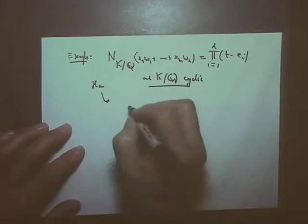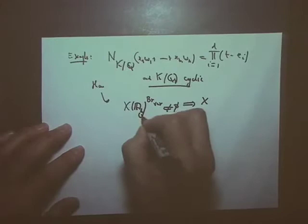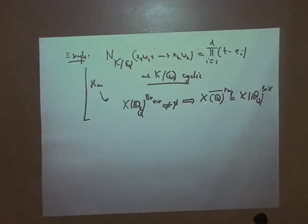Then, X of A_Q bar vertical, in fact, not empty, implies X of Q_top equals X of A_Q bar X. Because in this case, the fibers are just given by norm equals a constant, and the extension is cyclic. So, we know that for our equation of norm equals a constant, Hasse principle and weak approximation hold. And this is what I'm saying because it implies, in particular, that provided this condition is fulfilled.